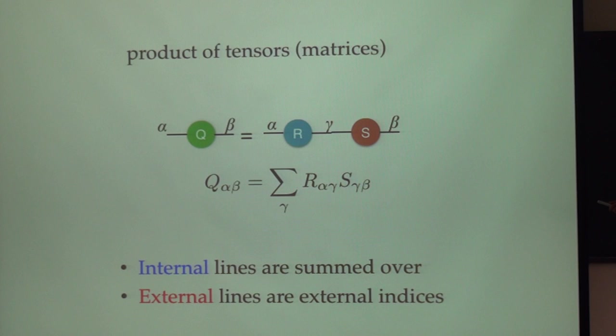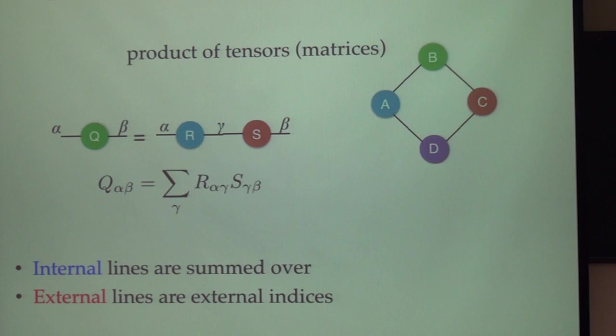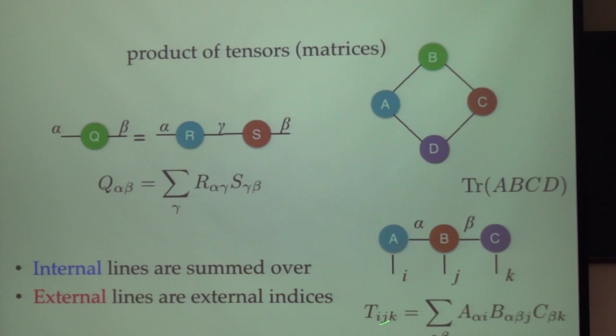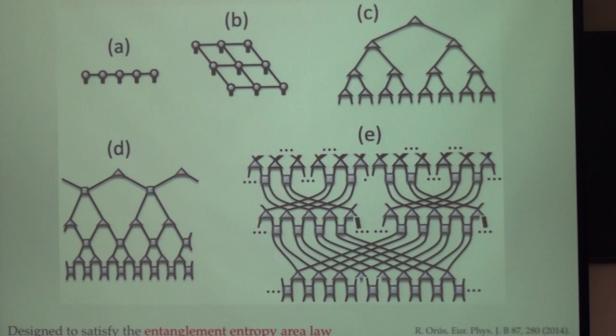You put two tensors together and connect the line, which means this is the Einstein convention, I just contracted. For example, this will be the contraction of R matrix and S matrix, I give it a new matrix U. So there's no external legs, so we know that the final result is a scalar. This is a trace of these four tensors. We can have different representations, contract and have a rank 3 tensor because I have three external legs. If you put those tensors together, these are the tensor network.